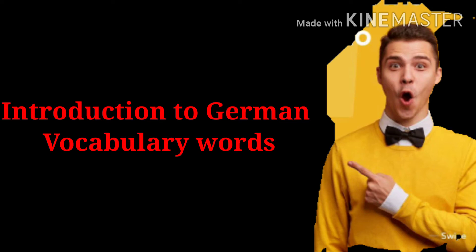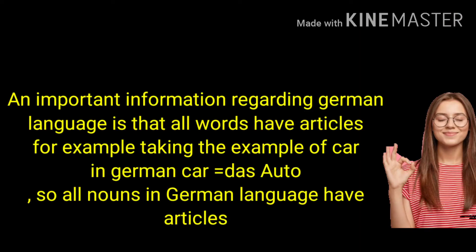An important piece of information regarding German vocabulary words is that all words have articles. For example, the word for 'car' in English — in German it is 'das Auto.' The article used here is 'das,' which is the neutral article. We also have other articles: for masculine it is 'der,' for feminine it is 'die,' and for plural the article is also 'die.' We will categorize each word as masculine, feminine, neutral, or plural.